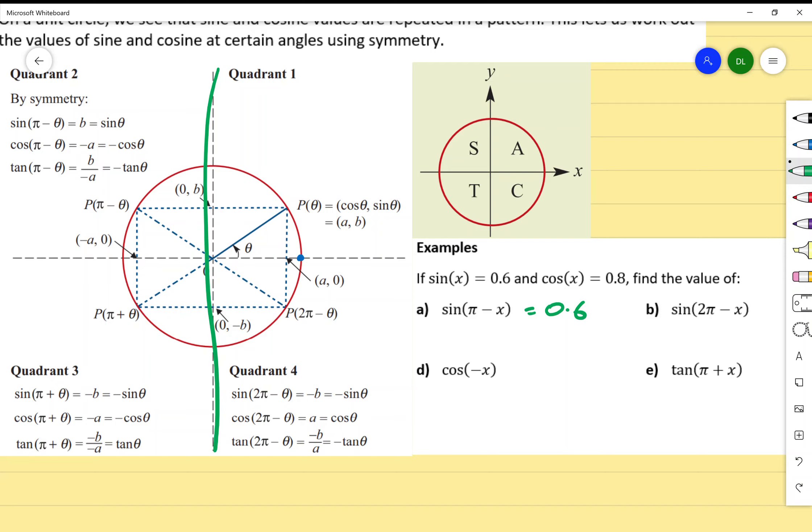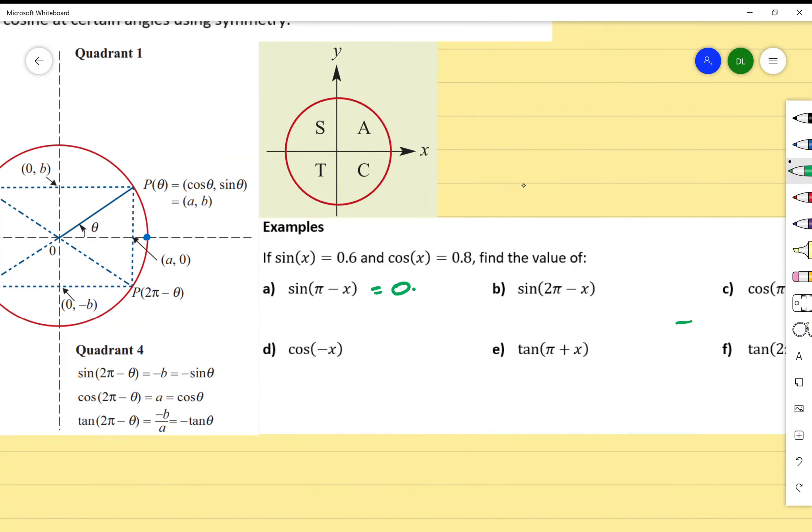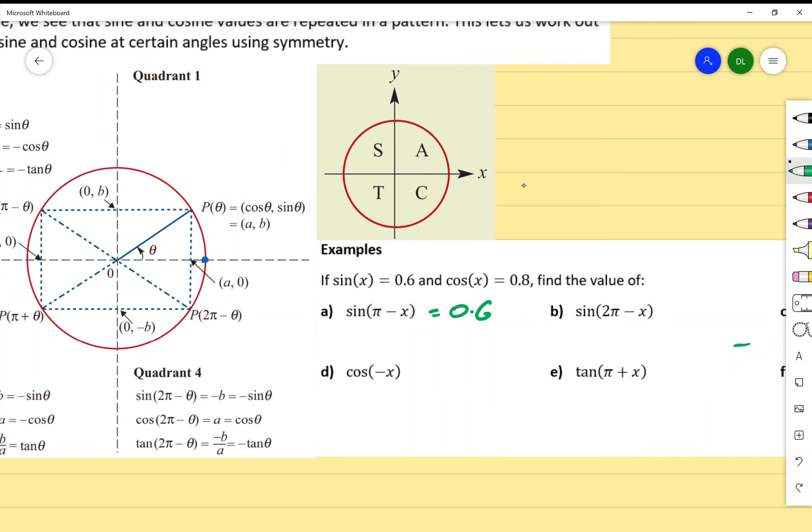Now if I go, for example, 2 pi minus x, we can imagine that 2 pi minus x—we're going all the way around the circle, 2 pi, which is 360 degrees, and we're going to take away our angle. We end up in quadrant 4, and if we're in quadrant 4, is sine positive? No, it's negative. So we just write equals negative 0.6.